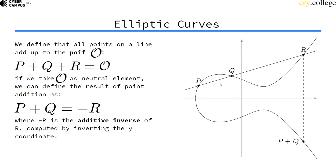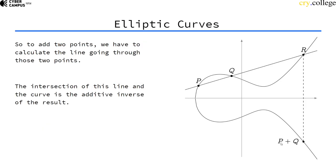And the inverse in an elliptic curve is just the point mirrored on the x-axis. So the y-coordinate is inverted, additively inverted. So if we want to add two points, we draw a line through those points.